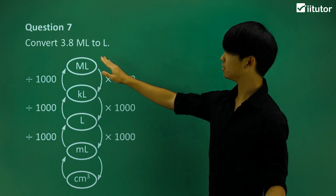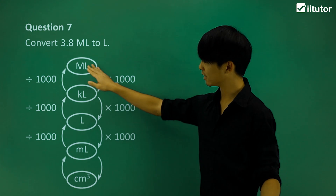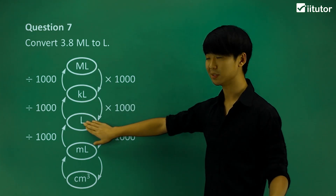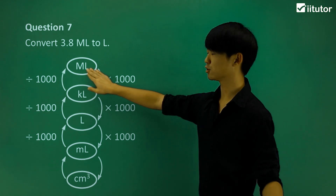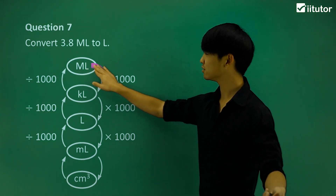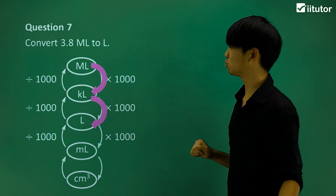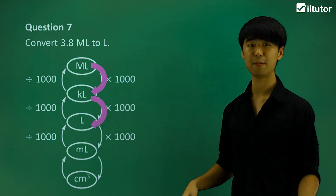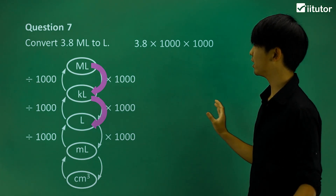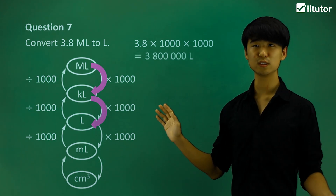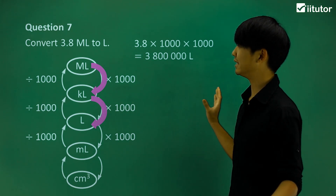Now looking at number seven: from megaliters to liters — that's two steps, so we need to do the conversion twice. We go from megaliters to kiloliters to liters, which means multiplying by 1,000 and then by another 1,000. Doing that multiplication gives us 3,800,000 liters.